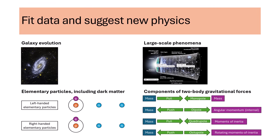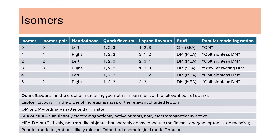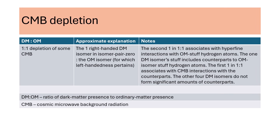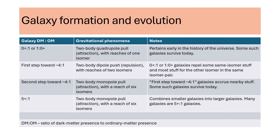Results. We discuss the extent to which our work fits data and suggests new physics. This discussion parallels the order that a previous list of phenomena that we seek to explain exhibits. We suggest a well-defined specification for dark matter elementary particles and for dark matter stuff. Most dark matter associates with popular modeling notions of collisionless dark matter. Some dark matter associates with popular modeling notions of self-interacting dark matter. Our suggestions about dark matter provide a basis for our explanation for the one-to-one ratio regarding some depletion of cosmic microwave background radiation. Some galaxies were essentially all ordinary matter galaxies; some such galaxies survive today. Some galaxies were essentially all dark matter galaxies; some such galaxies survive today.